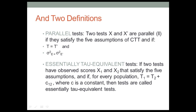Let's also take a look at the essentially tau-equivalent test definition. If two tests have observed scores x1 and x2 that satisfy the five assumptions, and if for every score the true scores on one equal the true scores on the other plus a constant c, then the two tests are considered essentially tau-equivalent tests.